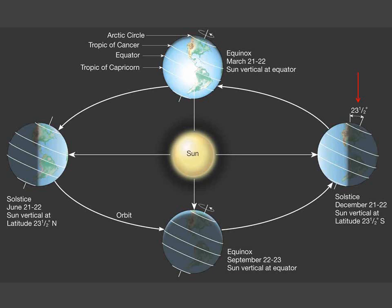The Earth has seasons because its axis is tilted. Earth rotates on its axis as it orbits the sun, but the axis always points in the same direction.